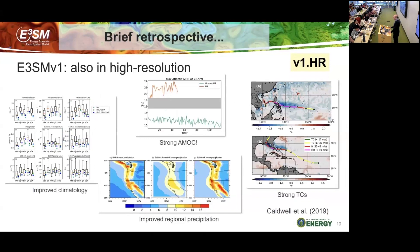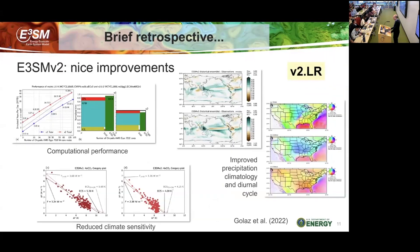In addition to the low-resolution version of V1, there was also a high-resolution version: a 25-kilometer atmosphere with an 18 to 6-kilometer ocean that had substantially improved climatology, a much stronger and more realistic AMOC, and nice improvements in regional precipitation. You can simulate strong tropical cyclones, something you really cannot do using a one-degree model. There are lots of improvements at higher resolution, but it becomes very expensive, so there's a limit on how many years we can simulate with such a configuration.